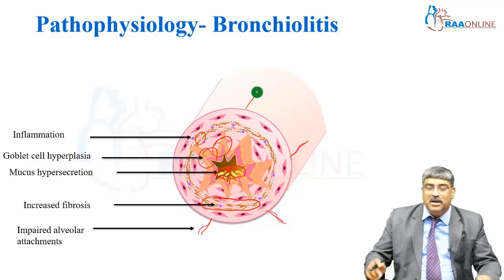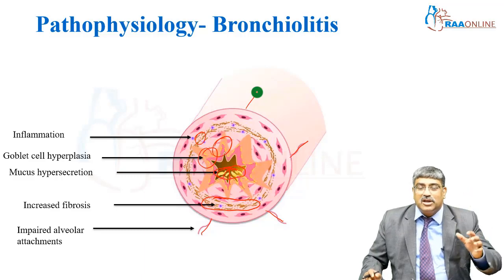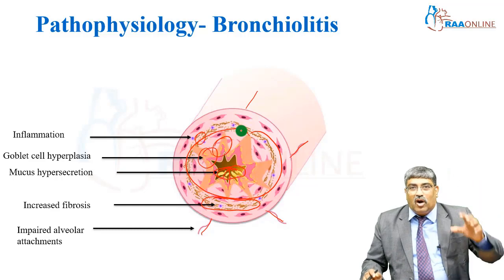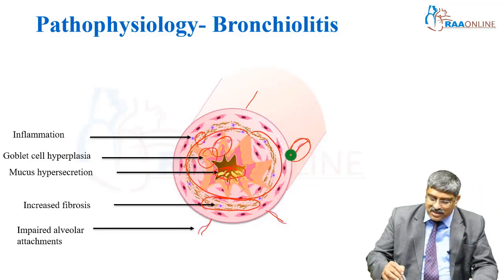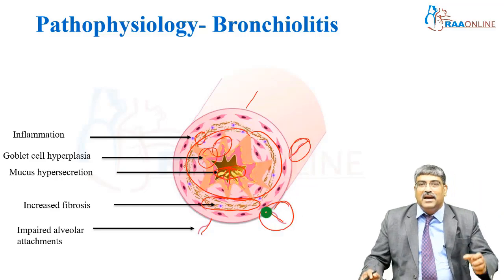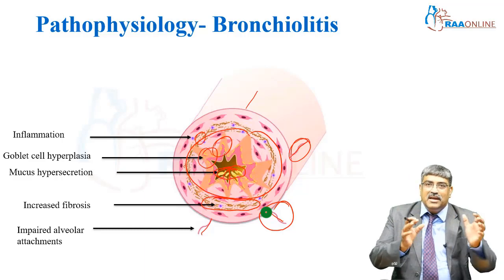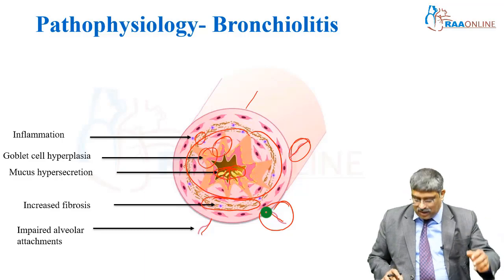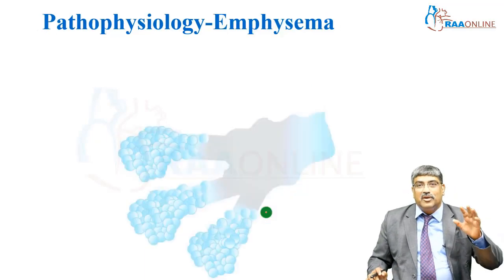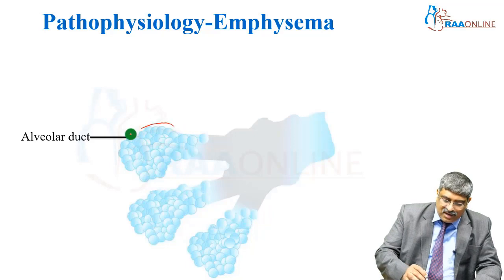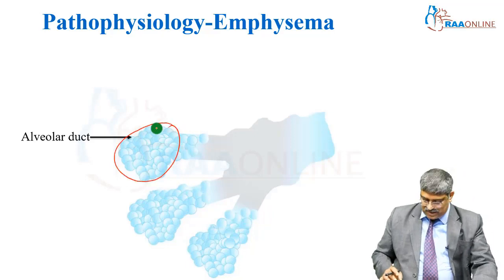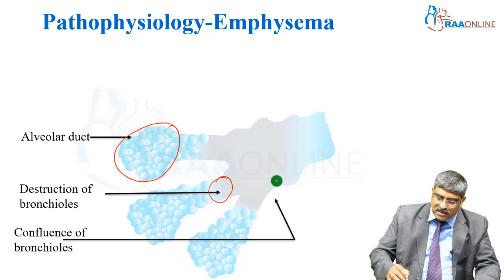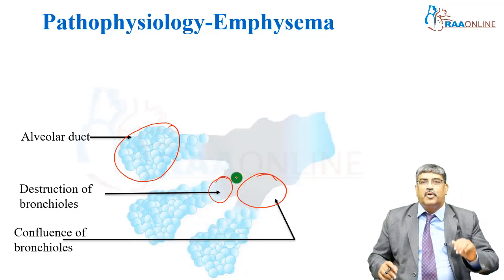The alveolar attachments are usually required to maintain the patency of the airway. But with chronic inflammation, these attachments get impaired and do not maintain patency as required when air flows in, leading to further narrowing. Coming to emphysema, there is a dilated alveolar sac and destruction of the terminal bronchioles, with confluence of the bronchioles.